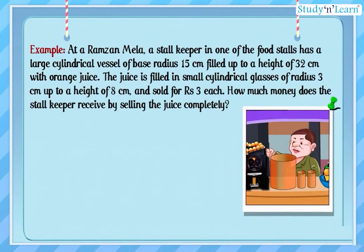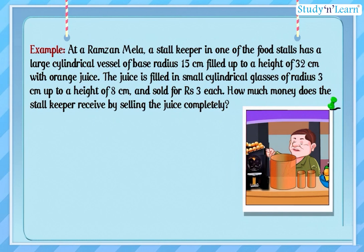Example: At a Ramzan Mela, a stall keeper in one of the food stalls has a large cylindrical vessel of base radius 15 centimeters filled up to a height of 32 centimeters with orange juice. The juice is filled in small cylindrical glasses of radius 3 centimeters up to a height of 8 centimeters and sold for rupees 3 each. How much money does the stall keeper receive by selling the juice completely?